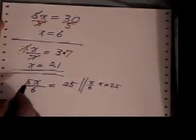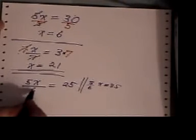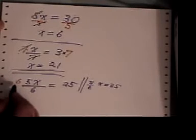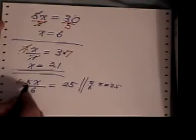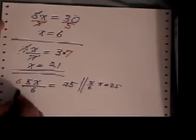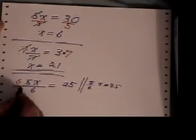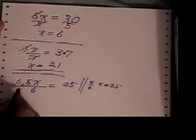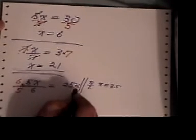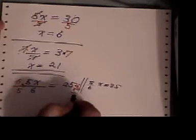Again, you look for the opposites. x has been divided by 6, so the opposite is multiplying by 6. x has been multiplied by 5, so the opposite is dividing by 5. But if I do 6 over 5 multiplied by the left side, I have to do 6 over 5 multiplied by the right side.